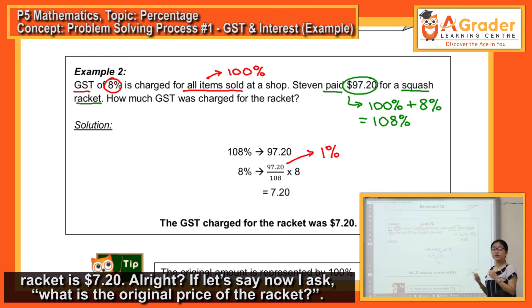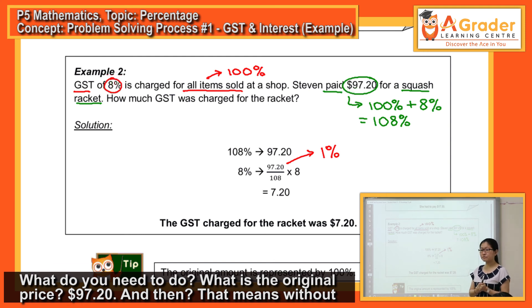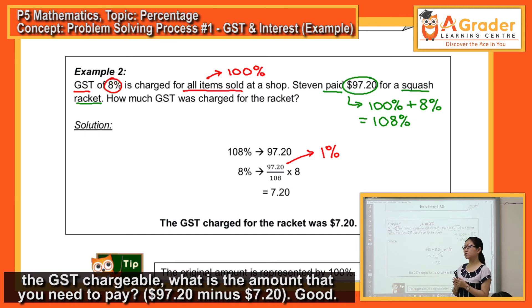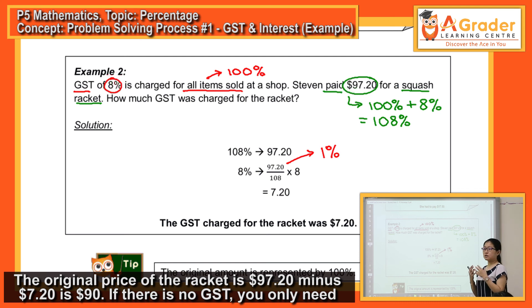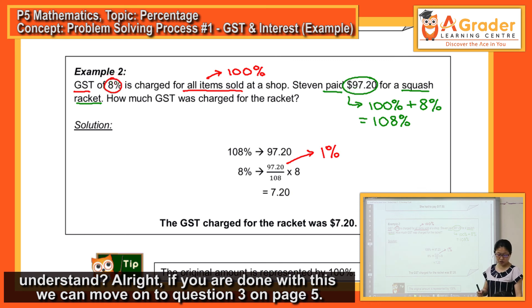So if I ask what is the original price of the record — that means without GST — the GST charged is $7.20. The original price is $97.20 minus $7.20, which is $90. If there's no GST, you only need to pay $90, but with GST it becomes more expensive, that's why it's $97.20. Now we can move on to question 3 on page 5.